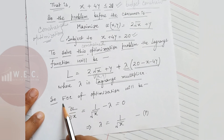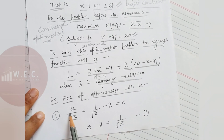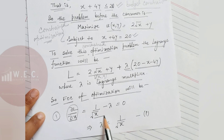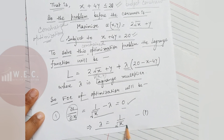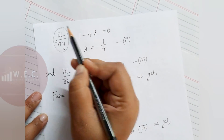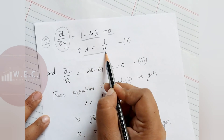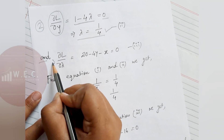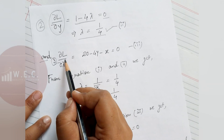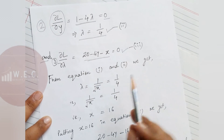The first order conditions are: ∂L/∂x = 0 gives λ = 1/√x (Equation 1); ∂L/∂y = 0 gives λ = 1/4 (Equation 2); and ∂L/∂λ = 0 gives 20 − x − 4y = 0 (Equation 3).